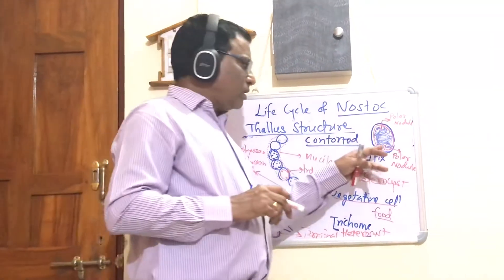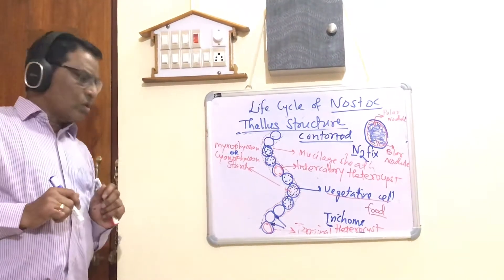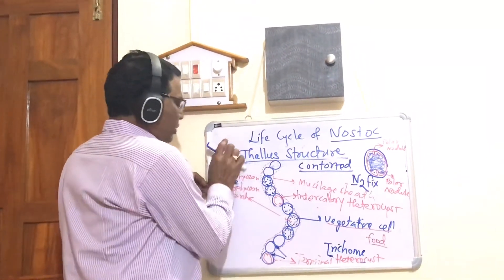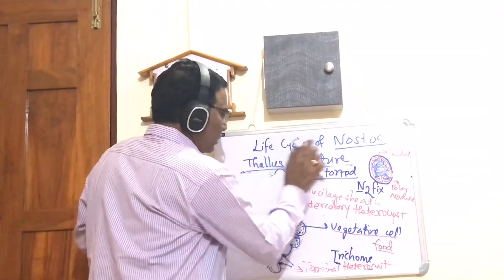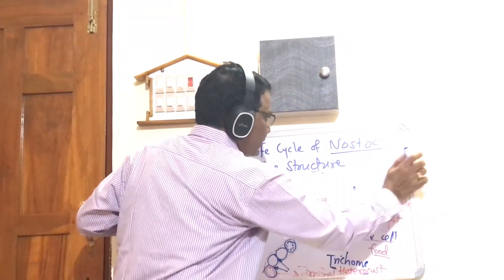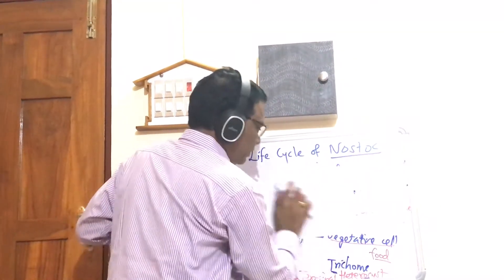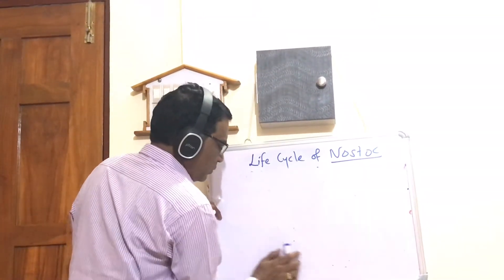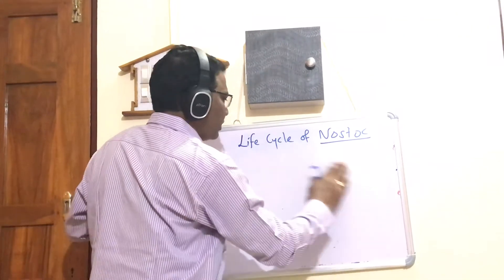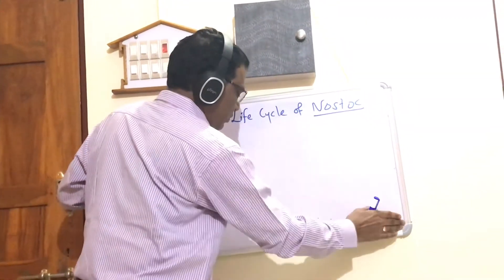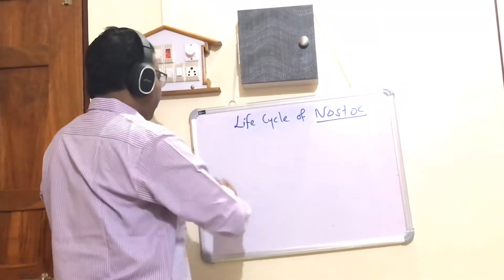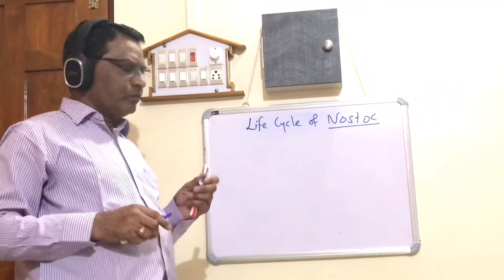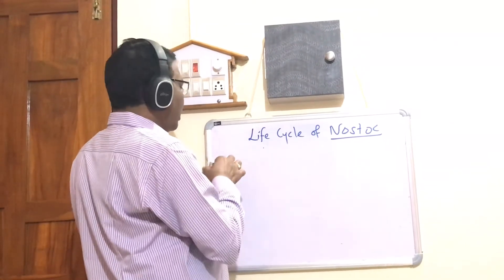Besides nitrogen fixation, the heterocyst also plays an important role in vegetative and asexual reproduction. So this covers the structure of colony, structure of thallus, structure of vegetative cell, and structure of heterocyst. The function of vegetative cells is photosynthesis to produce food in the form of myxophycean starch, and the main function of the heterocyst is nitrogen fixation, besides helping in reproduction.